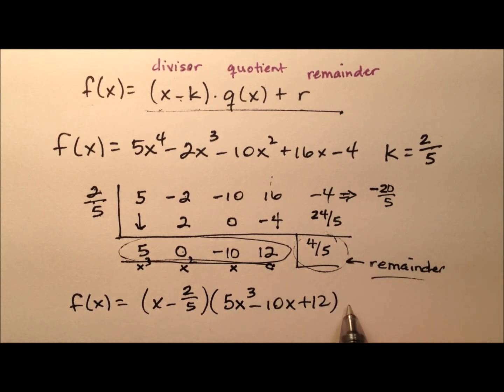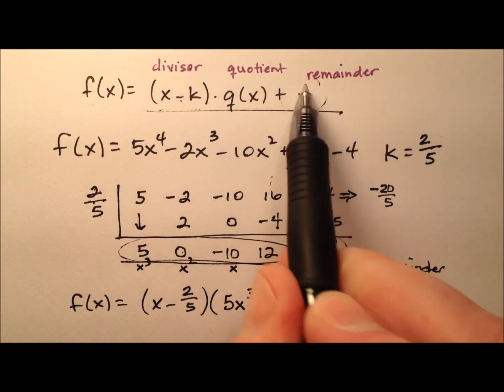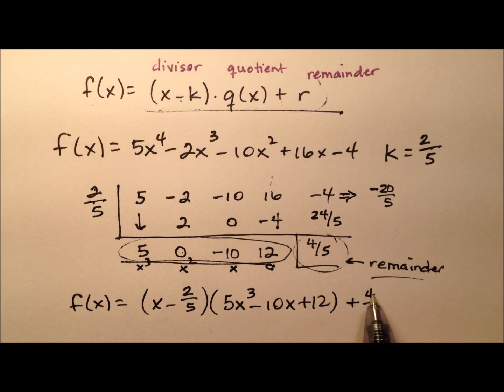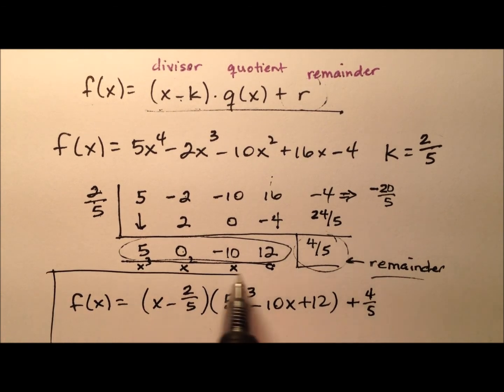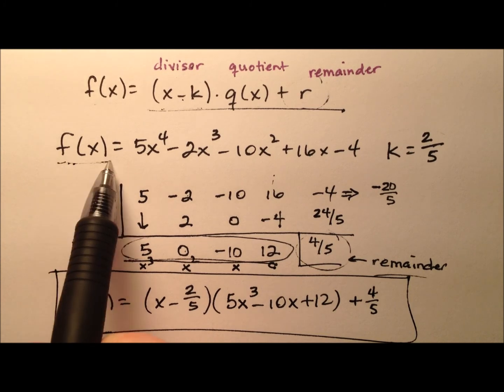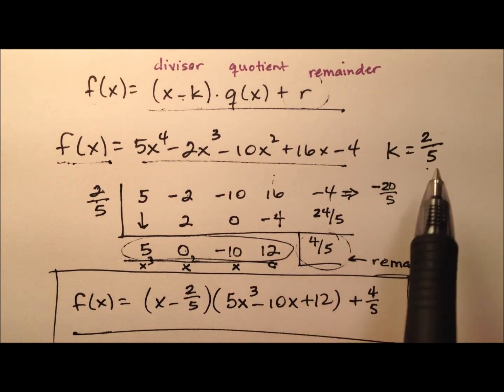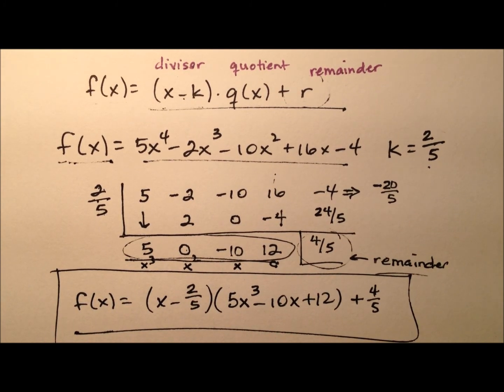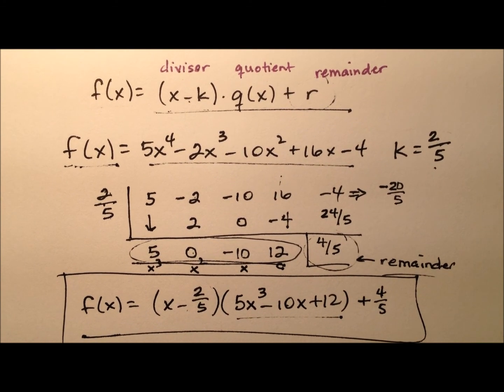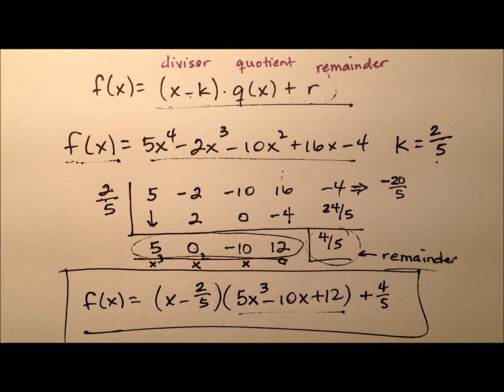So I'll say 5x³ - 10x + 12. And that's this polynomial. And then our remainder comes afterwards, and that's plus 4/5. So I have rewritten this polynomial f(x), given this value of k for the division. And I rewrote it as the divisor, x minus k, times this quotient, and then I added the remainder on the end. So that's what this will look like when we rewrite this.